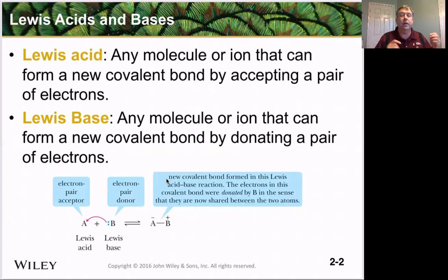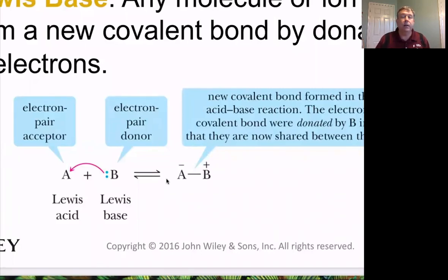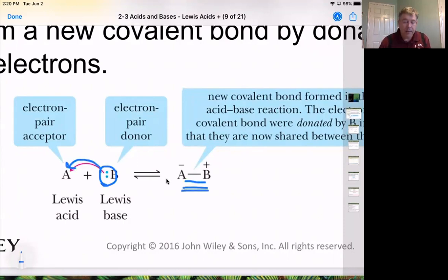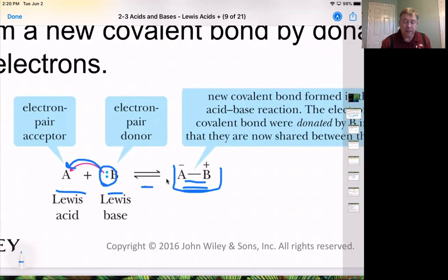In contrast, a Lewis base would be any molecule or ion that can form a new covalent bond by donating a pair of electrons. So a Lewis acid wants to accept a pair of electrons to form that new bond, and a Lewis base donates those electrons — for example, via a lone pair — to create that new bond. If both species were neutral initially, charges will form in the final product. And like most acids and bases, there is the possibility for an equilibrium to exist.